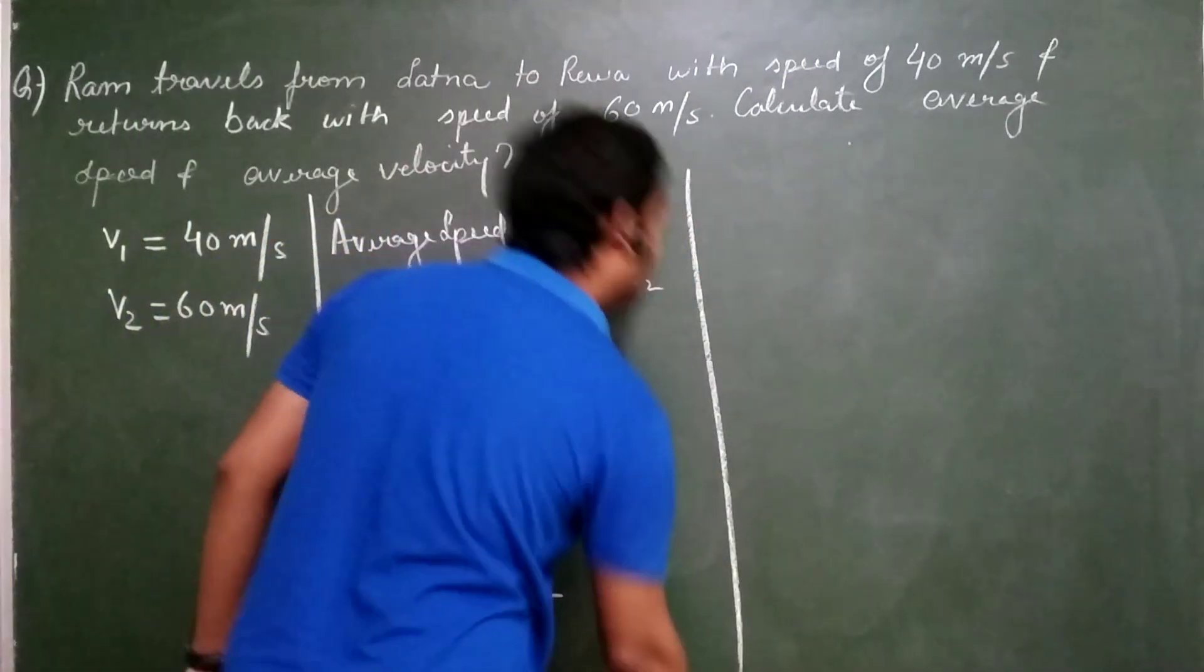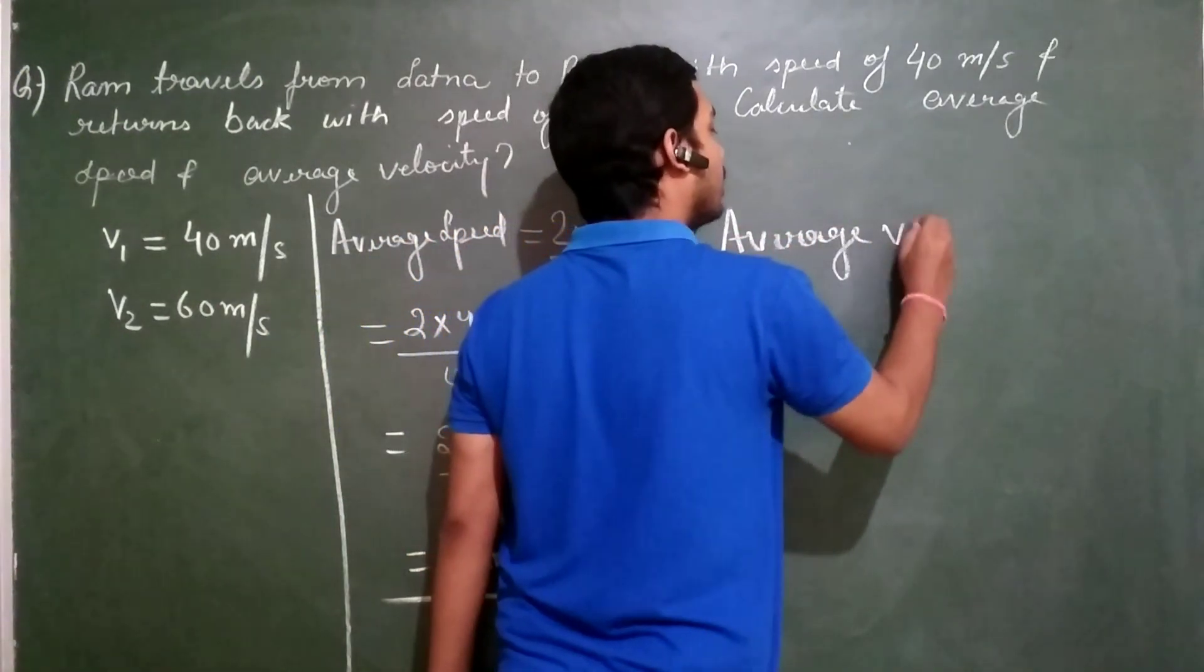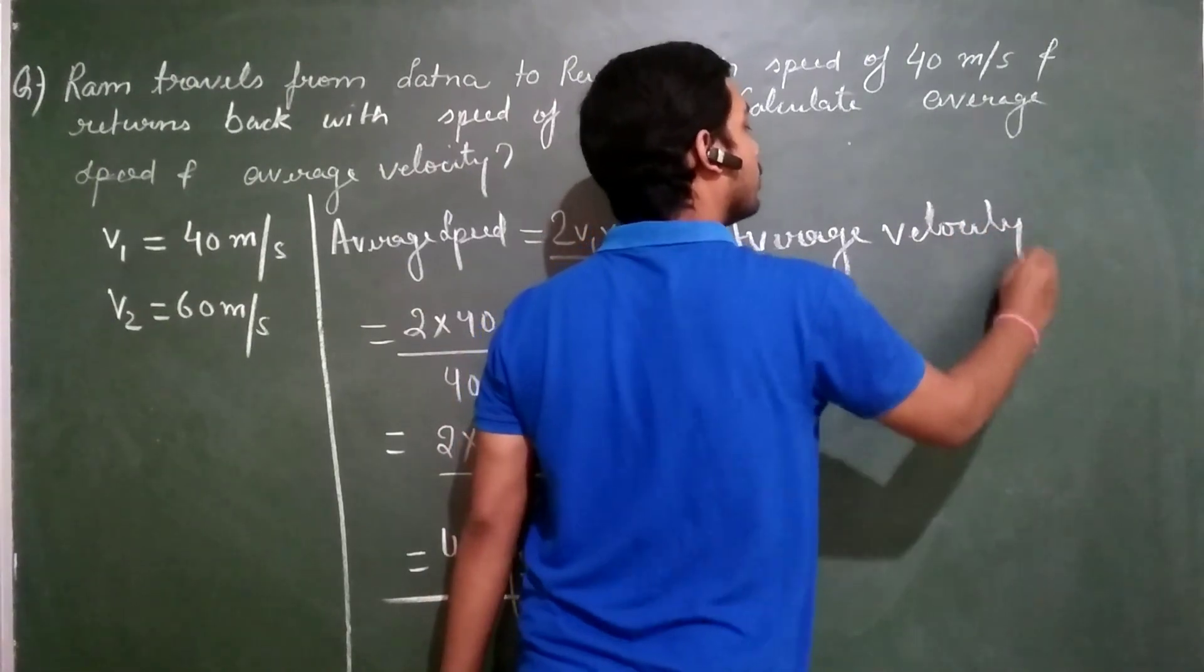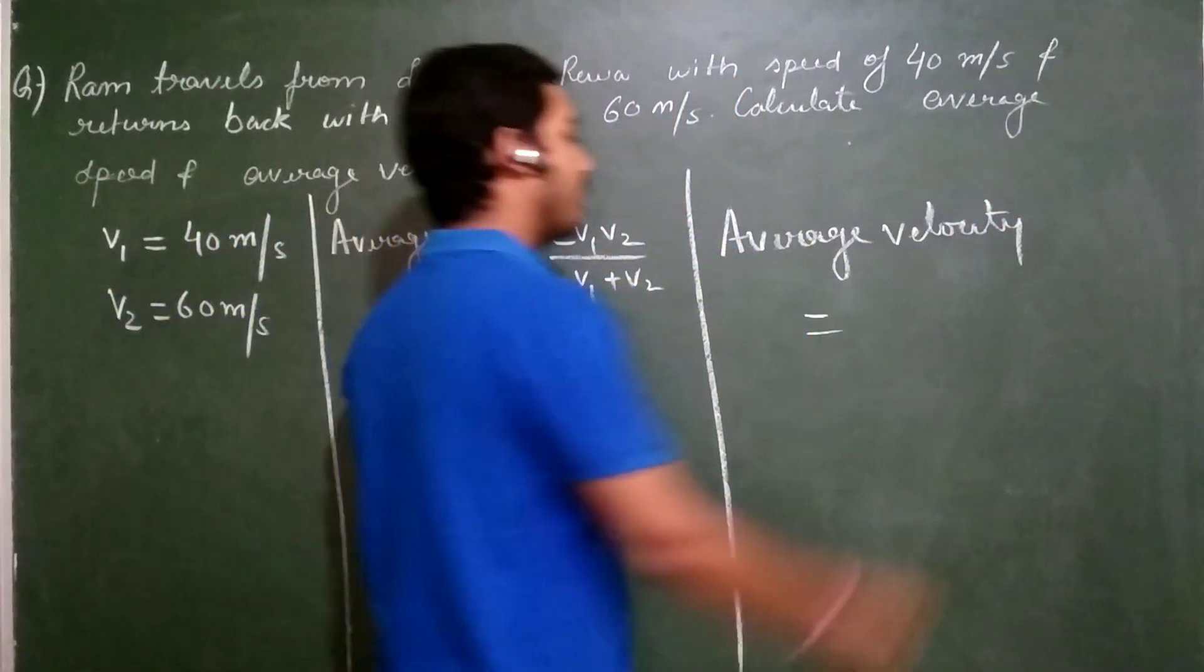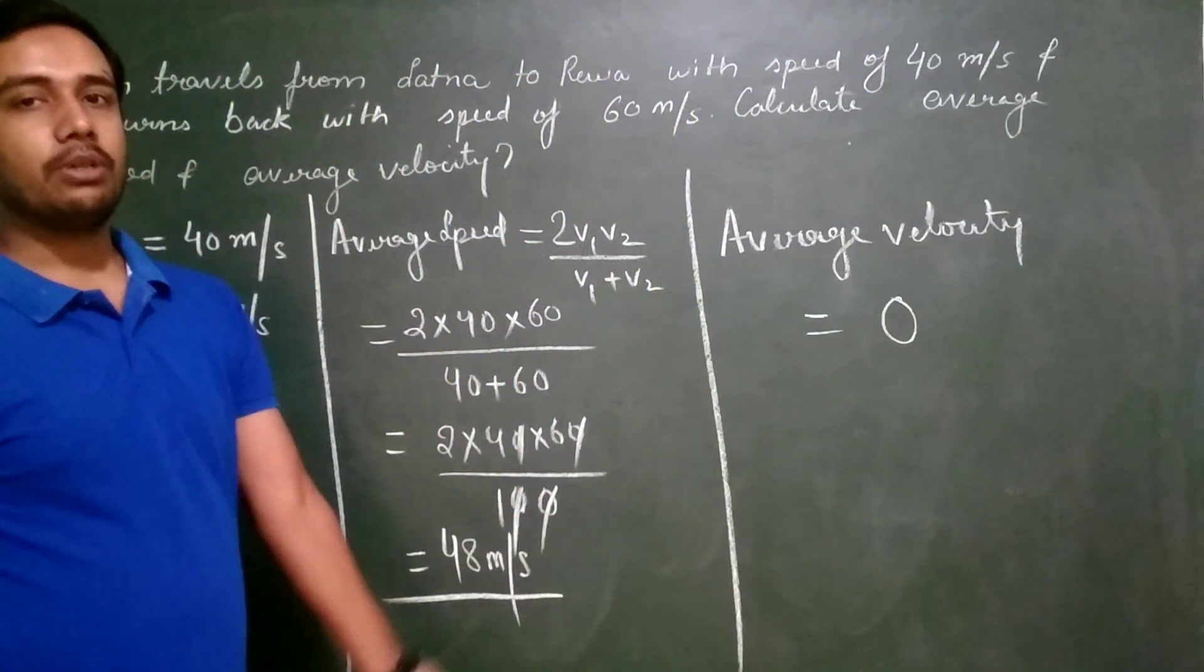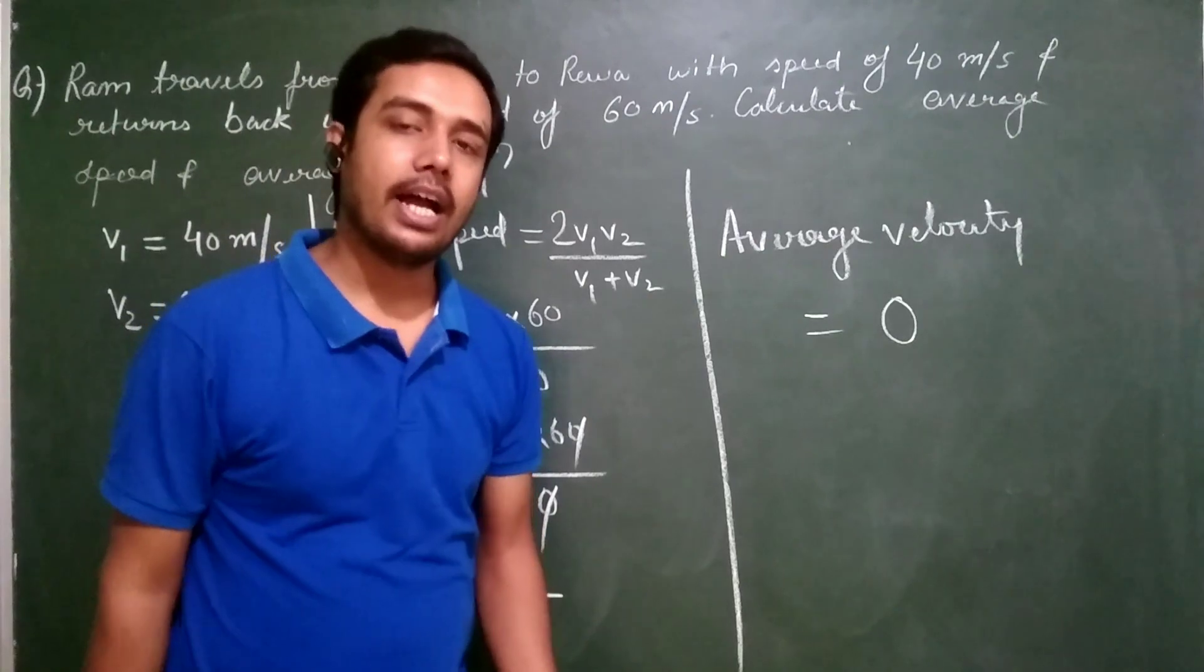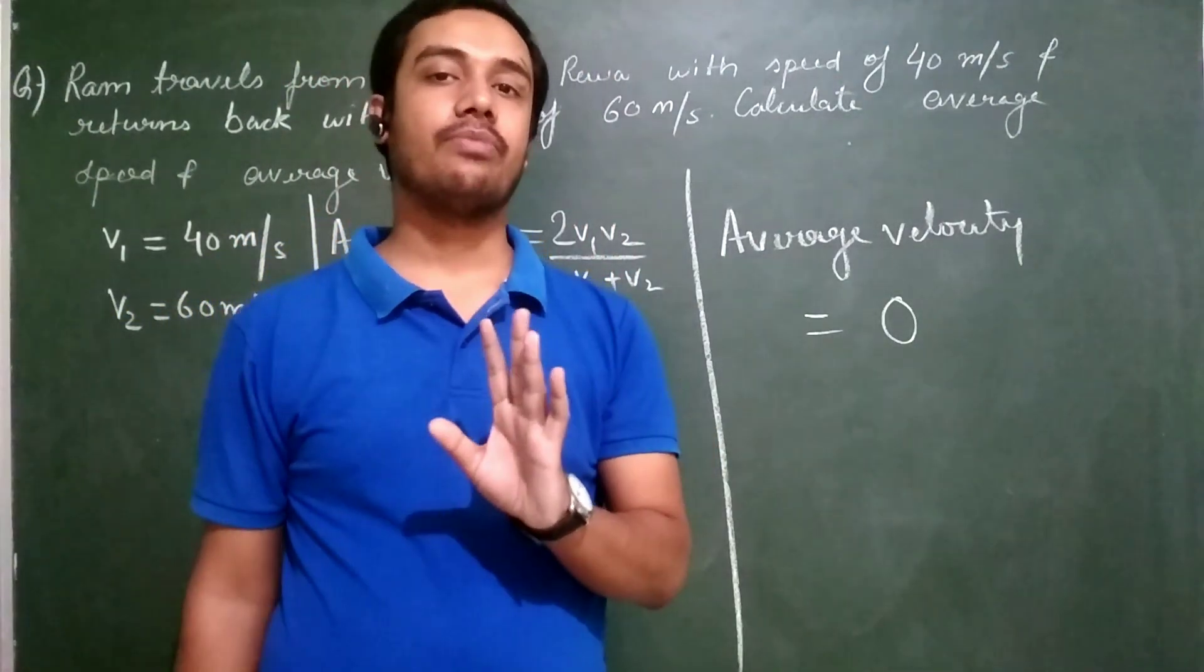Now I have to calculate the average velocity. Average velocity. What will be the average velocity? Simply you can write the answer 0. Why 0? Because he is returning back to his initial position. Displacement is 0.